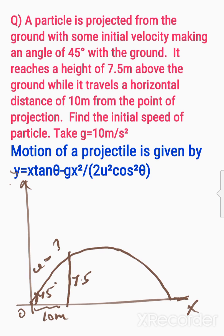Let's solve the question. This is the formula of projectile motion: y equals x tan θ minus gx² divided by 2u²cos²θ.